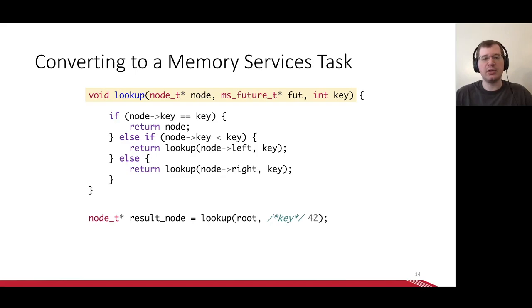Next, because a task may execute far away from the original application thread, we can't return values through registers like a C function return. Instead, as the second argument, tasks take a future. This works like a future in a regular asynchronous programming interface. It represents a value that's not yet available. Finally, a task can take a number of user-defined arguments, in this case the desired key.